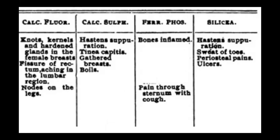Phytolacca also carries Calcarea Sulph features: hastened suppuration, tinea capitis, and gathered or constricted breast. Ferrum Phosphoricum contributes: bones inflamed, pains through the sternum with curvature. Silica contributes: sweat on toes, periosteal pains. These are the ingredients present in Phytolacca Decandra, out of which potash is much more, and that's why it carries more symptoms of the Kali salts as compared to Calcarea and Silica. This is called scientific study — this is the scientific aspect of looking at remedies in homeopathy.